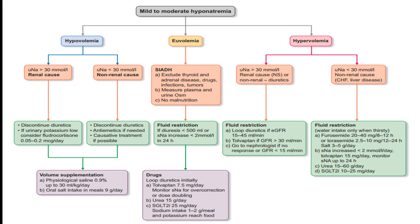For hypervolemic hyponatremia: urine sodium greater than 30 mmol/L indicates a renal cause; less than 30 mmol/L indicates a non-renal cause such as CHF or liver disease. Apply fluid restriction — water intake only when thirsty. Treatment: furosemide 20 to 40 mg every 8 to 12 hours, or torasemide 2.5 to 10 mg every 12 to 24 hours, salt intake 3 to 5 grams per day. If serum sodium increases less than 2 mmol/L per day, start tolvaptan 15 mg per day and monitor serum sodium for 24 hours. Urea 15 to 60 grams per day; SGLT2 inhibitors 10 to 25 milligrams per day.